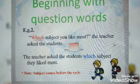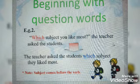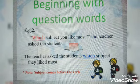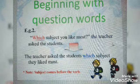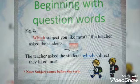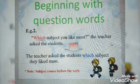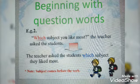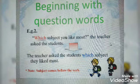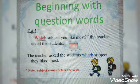In the second type of WH-question, for example: 'Which subject do you like most?' the teacher asked the students. In reported speech: The teacher asked the students which subject they liked most. This is also an example of a WH-question, and so the subject comes before the verb.